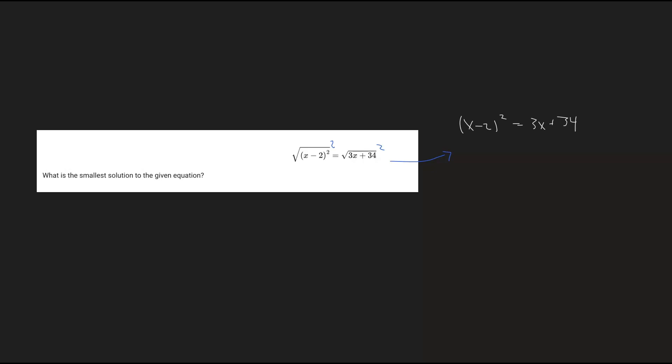Now we know that (x minus 2) squared can be rewritten as x squared minus 4x plus 4, and we can set this equivalent to 3x plus 34.